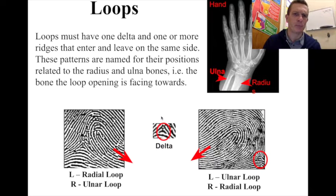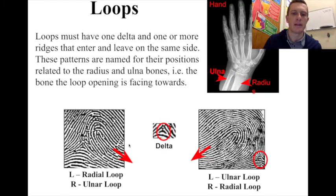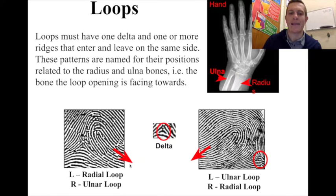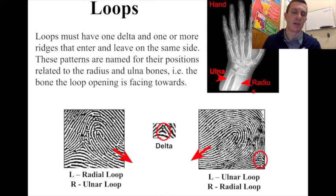A loop has what's called a delta — a triangular shape that exists in the fingerprint. That triangular shape makes one of these ridges that enters on one side hit the delta and then exit on the same side. Whether you have an ulnar loop or a radial loop is going to determine which hand you have and which side that arch is entering and exiting.